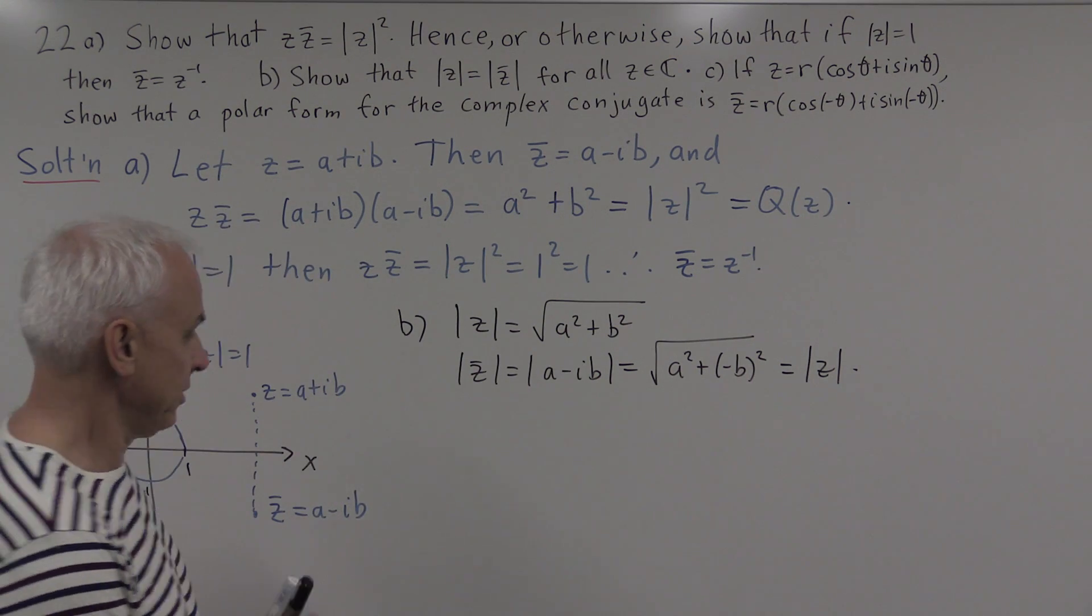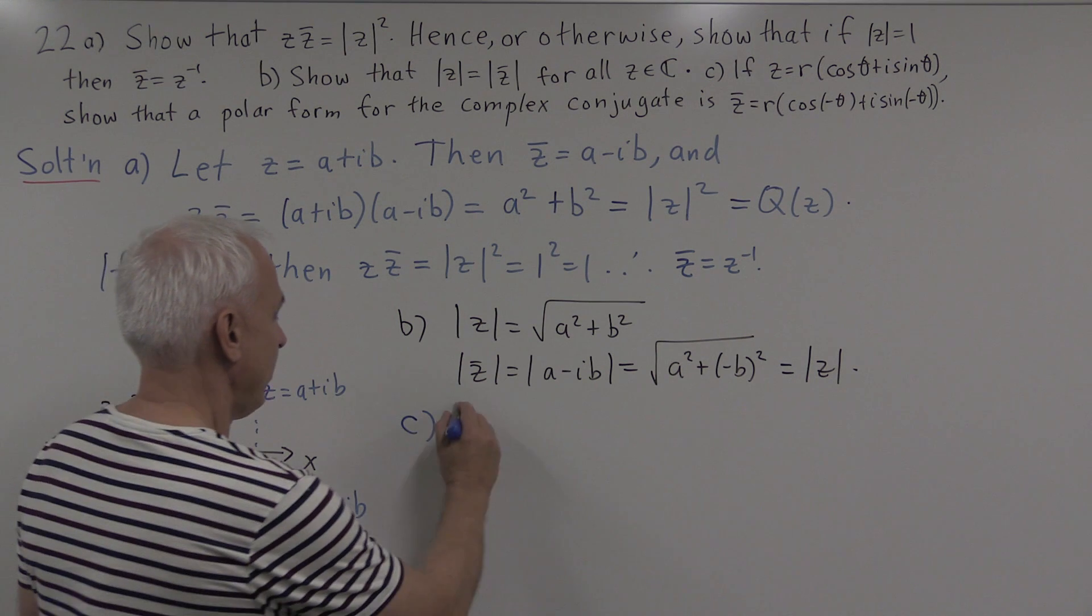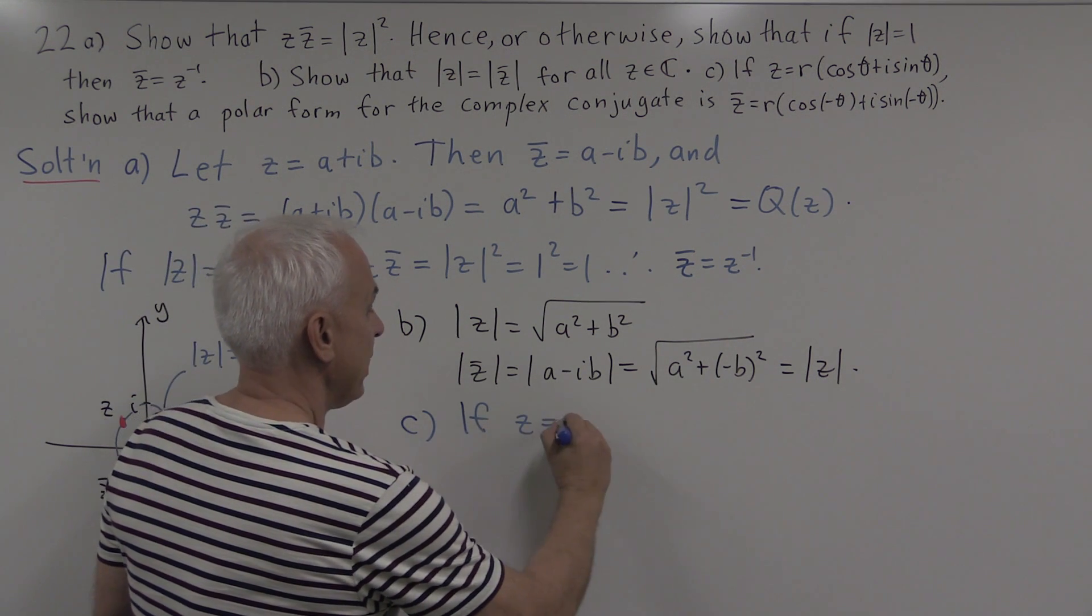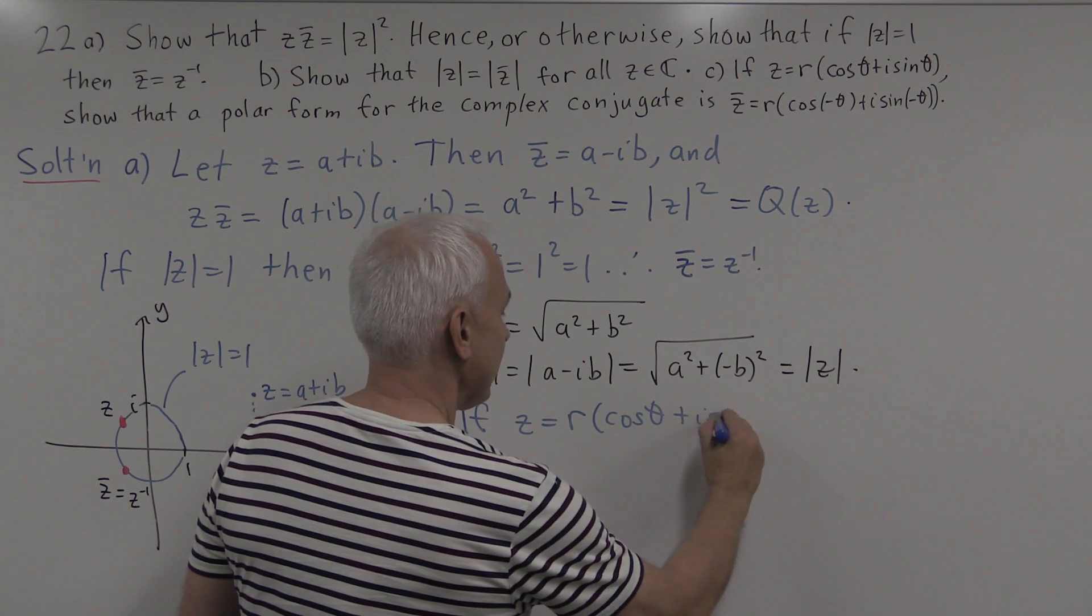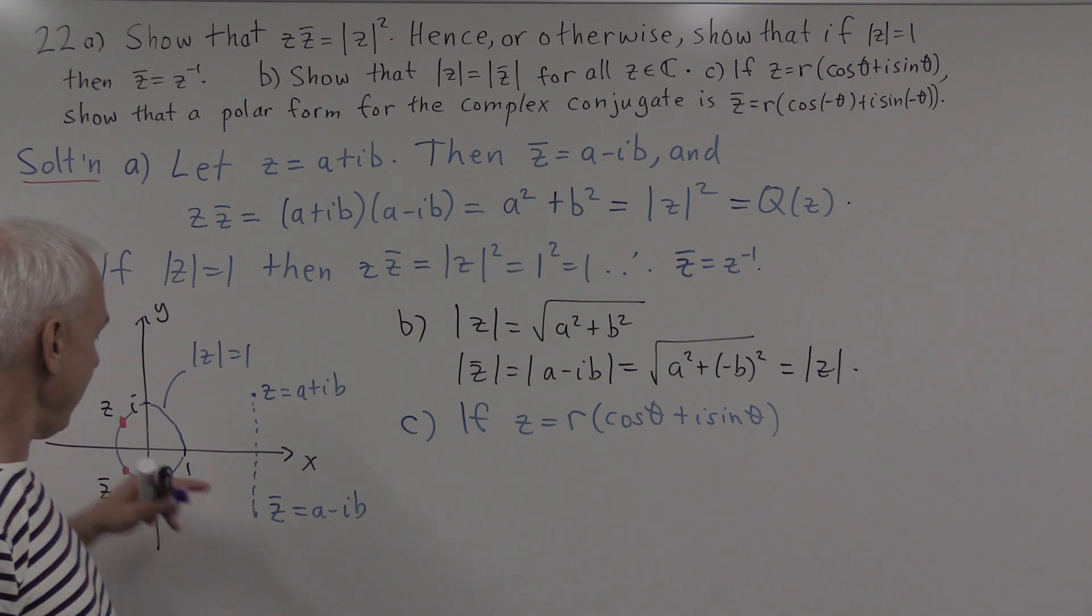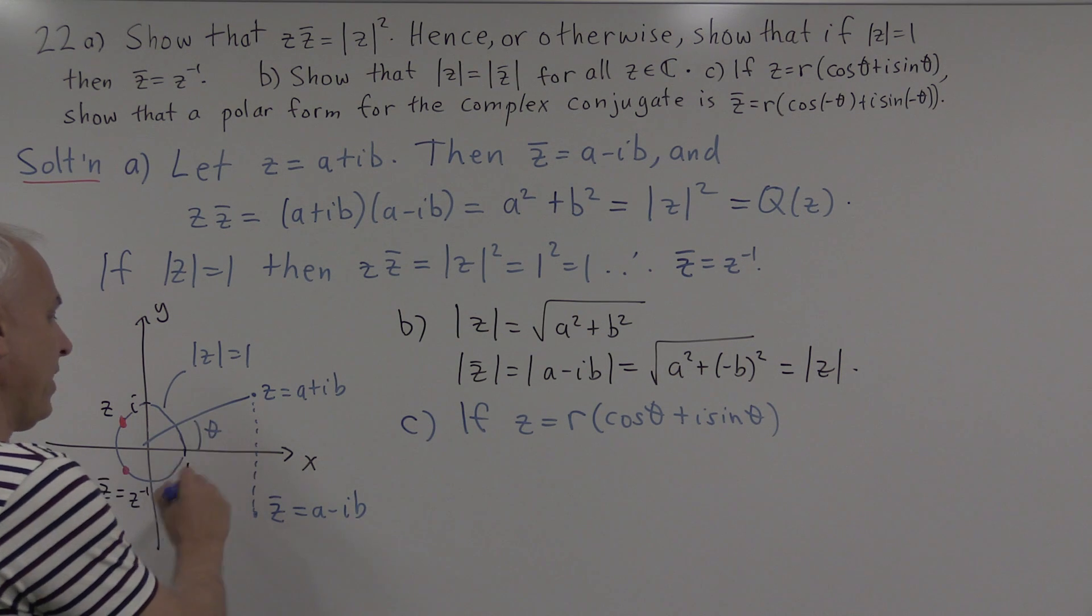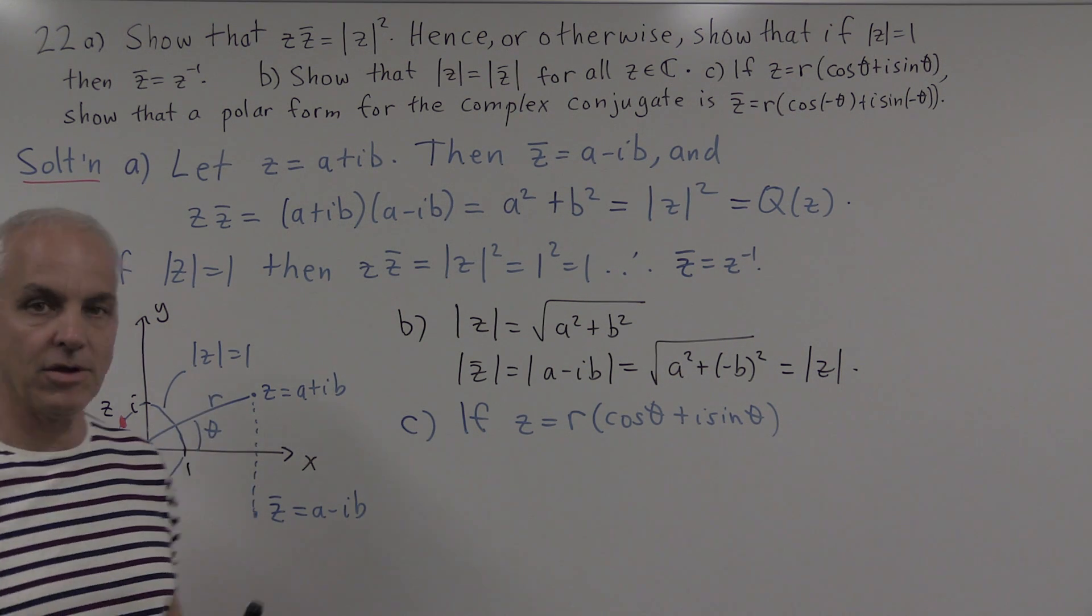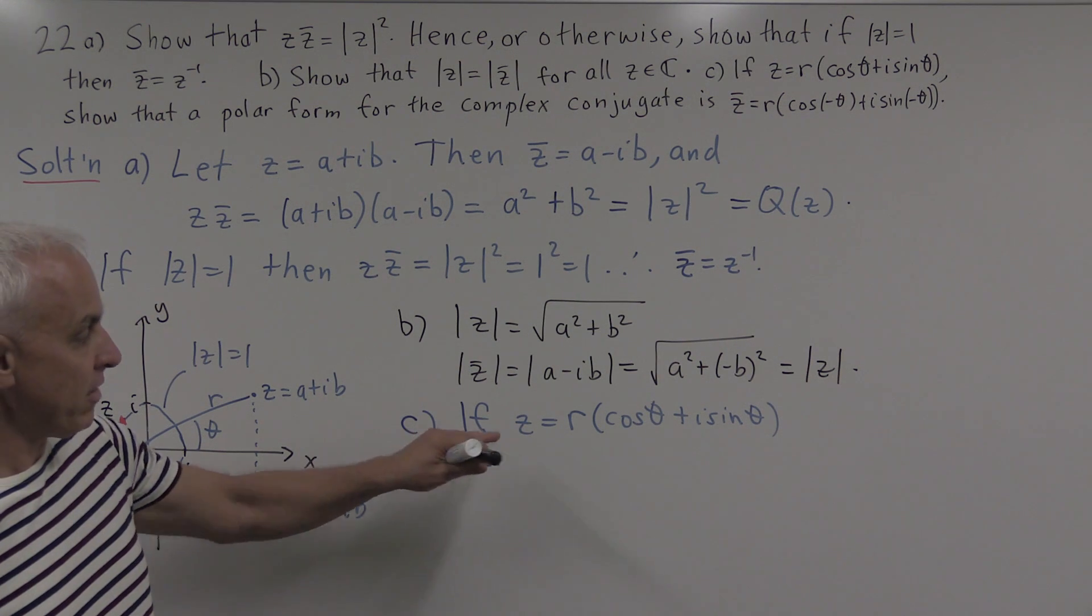Alright, now for the third part, part c, we're asked to show that if z is in polar form, so r times (cos θ + i sin θ). So now expressed in terms of an angle in this picture, the angle would be that one there, and the modulus r, then we're supposed to get a formula for z-bar.